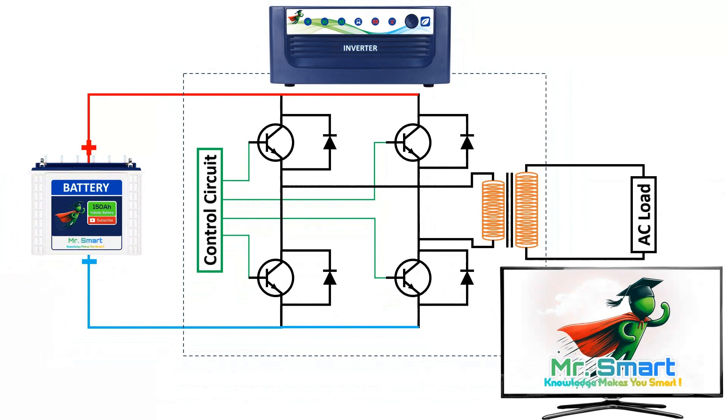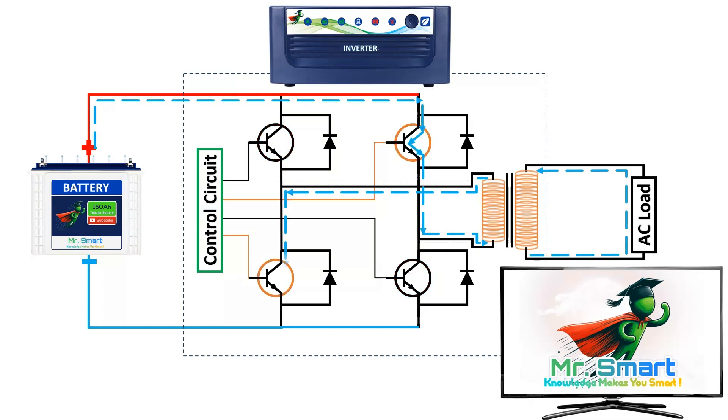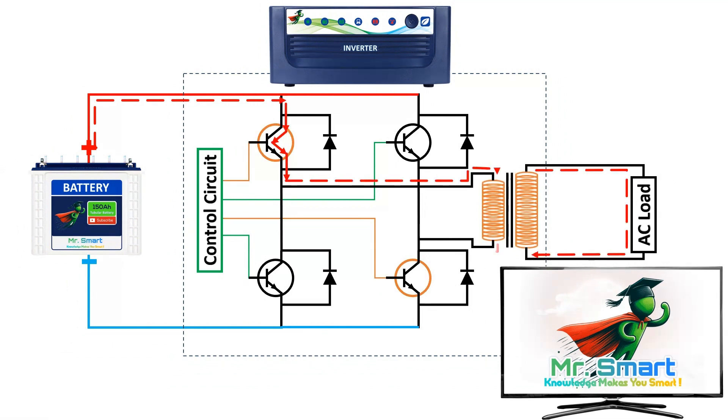The oscillator circuit is actually the heartbeat of the inverter. It's responsible for creating the wave pattern that simulates AC power. The oscillator circuit rapidly switches the DC current on and off. This switching is done using components like transistors or MOSFETs. By controlling switching speed, the circuit generates an oscillating signal.